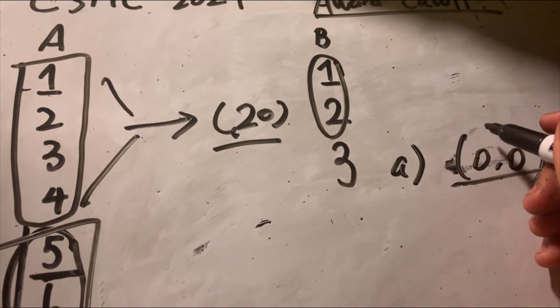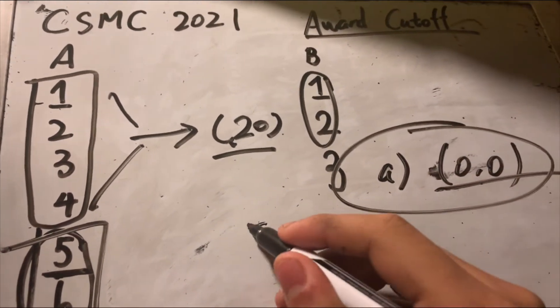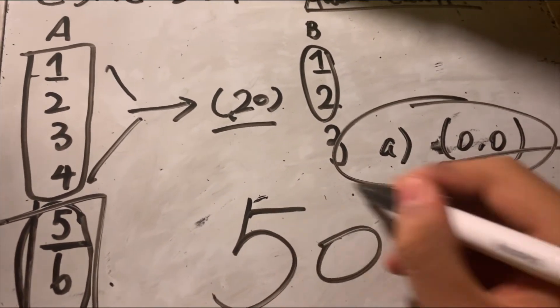Therefore, in terms of analysis, I would say that this year's award cutoff should be about 50.